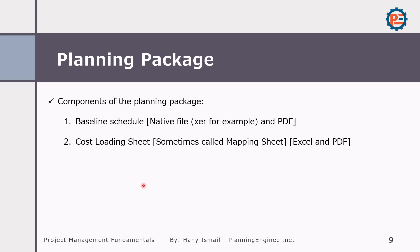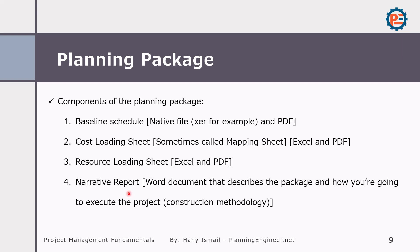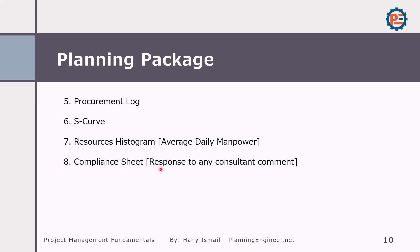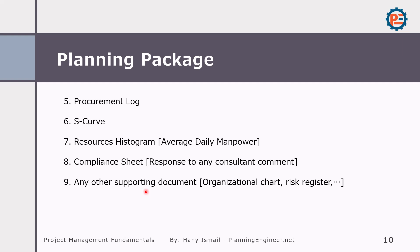Mainly we have the baseline schedule, then cost loading sheets — also called a mapping sheet where we map the BOQs and activities — in Excel and PDF. Resource loading sheet also in Excel and PDF. Narrative report is a Word document that describes the packages and how you are going to execute the project; sometimes called construction methodology. We should also have a shop drawing log, procurement log, S-curve, resource histogram showing average daily manpower, compliance sheet as a response to any consultant comments, and other supporting documents like organization chart and risk register.